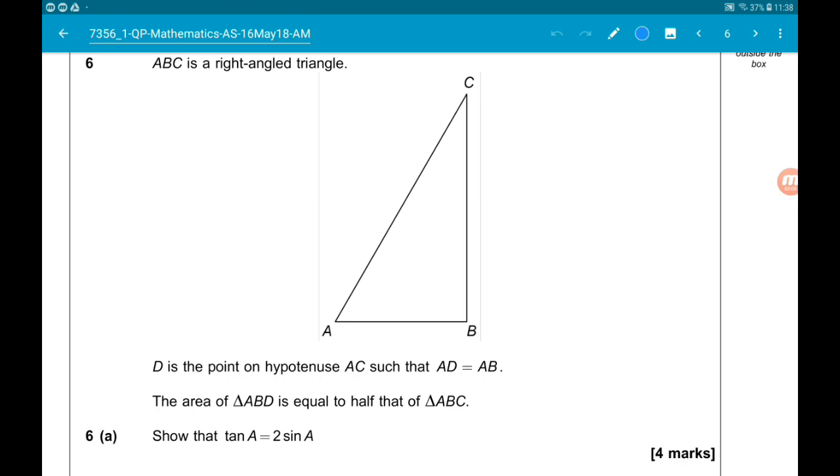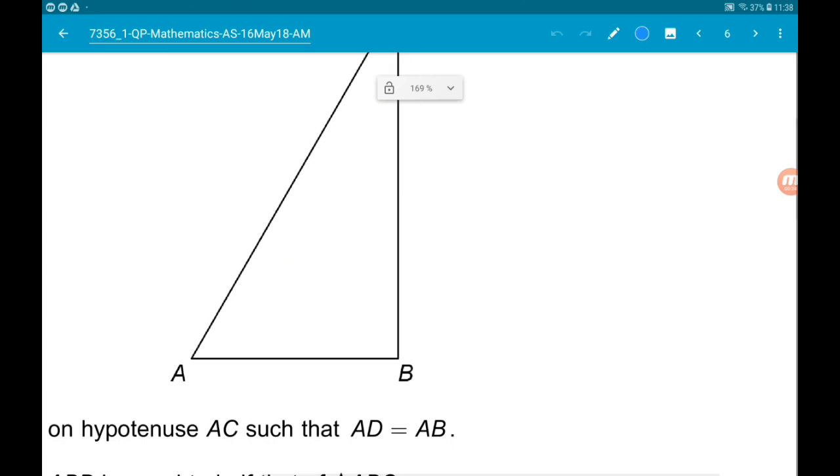We are told that D is the point on the hypotenuse AC, such that AD is equal to AB. So straight away, let's put point D there. Then we know this length is the same as that length.